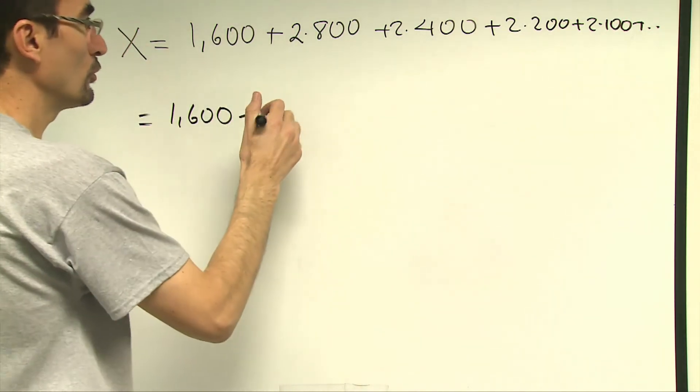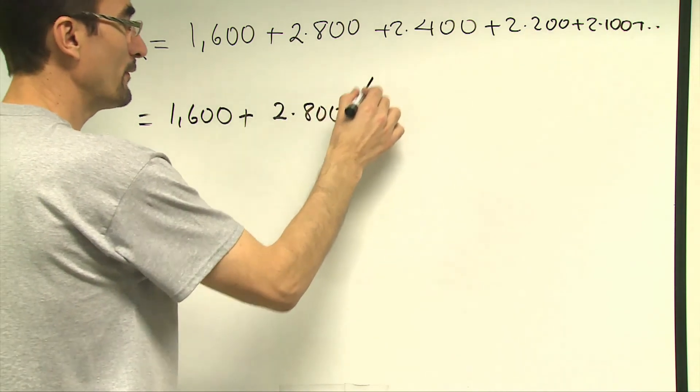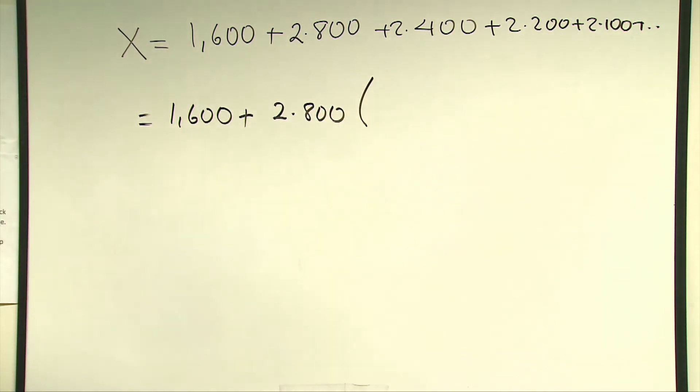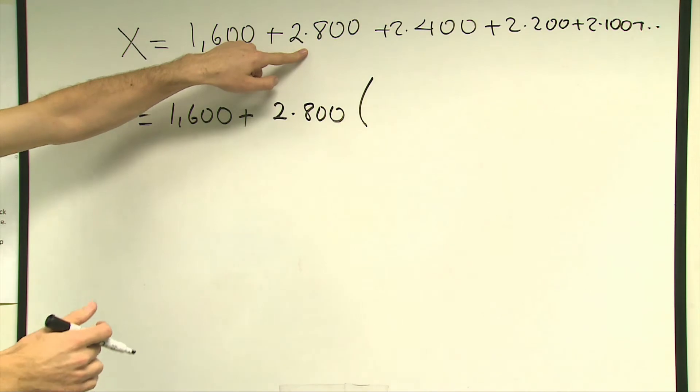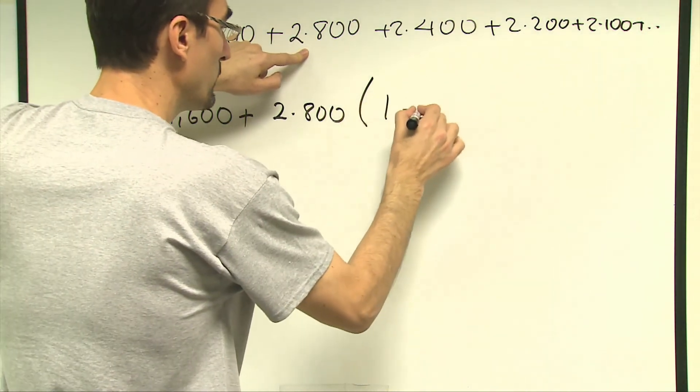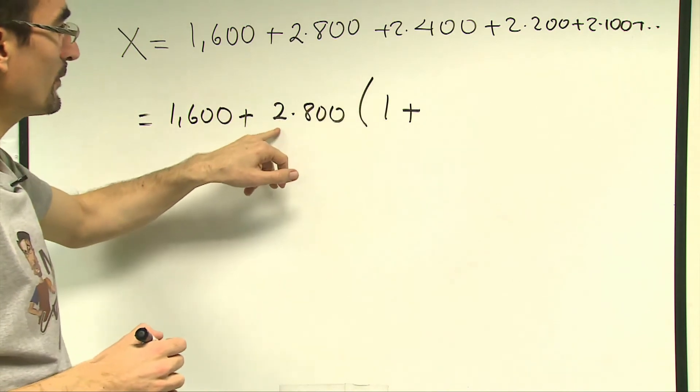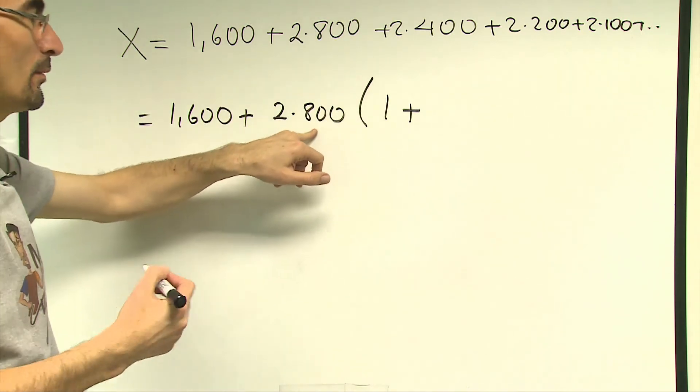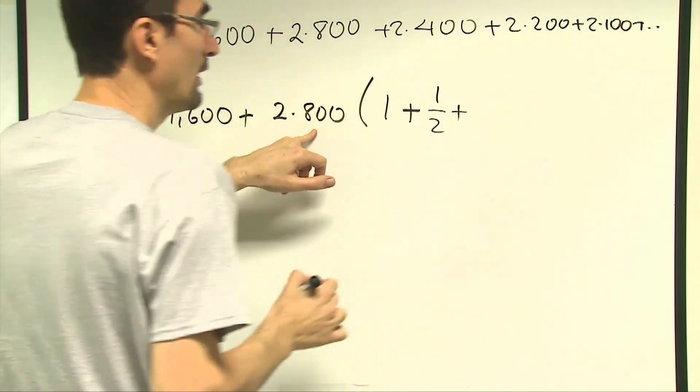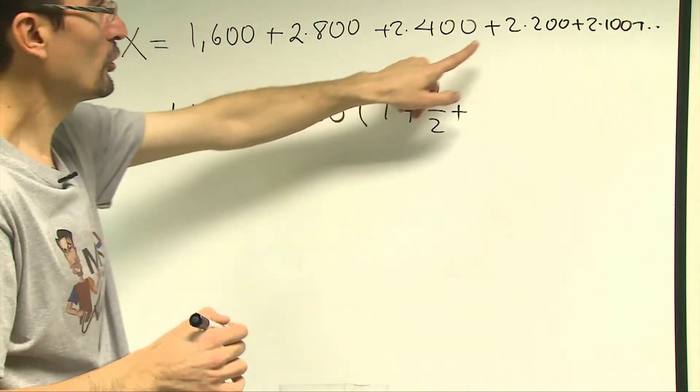If I simply use 2 times 800 as the common factor and open the parentheses, the first expression I'll be left with here will be 1 plus, since I divided 2 times 400 by 2 times 800, I'll be left with one half right. And then my third expression will be 2 times 200 divided by 2 times 800, the 2 is cancelled out, will be equal to 1 fourth.